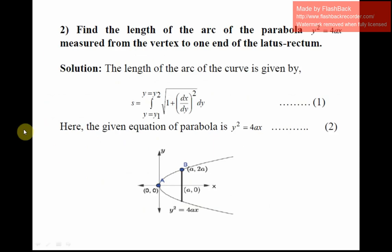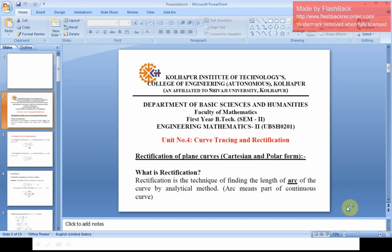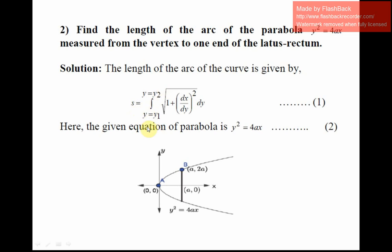We try to understand the next example. Find the length of arc of the parabola y² = 4ax measured from the vertex to one end of the latus rectum. Vertex means the origin. Using the same formula but with respect to y: s = integral from y₁ to y₂ of √(1 + (dx/dy)²) dy. Since the equation can be simplified as x = f(y), we use the given equation y² = 4ax, which we write as equation number 2. This is the diagram of the parabola y² = 4ax.